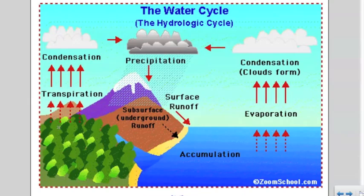Over here, transpiration is the process by which living plants release water vapor into the atmosphere. The warm water from these two places cools and expands by the process of condensation, which is when a gas changes into a liquid and clouds form.